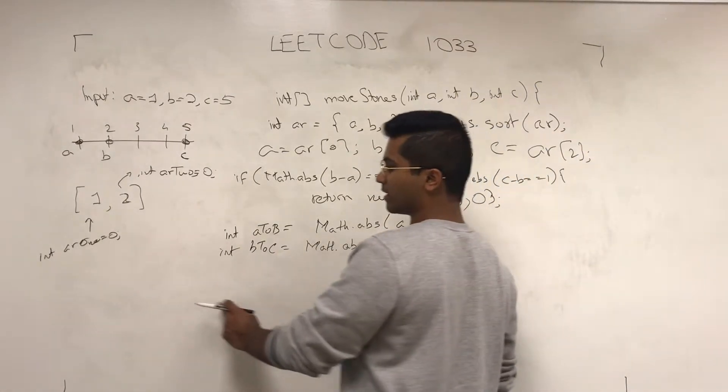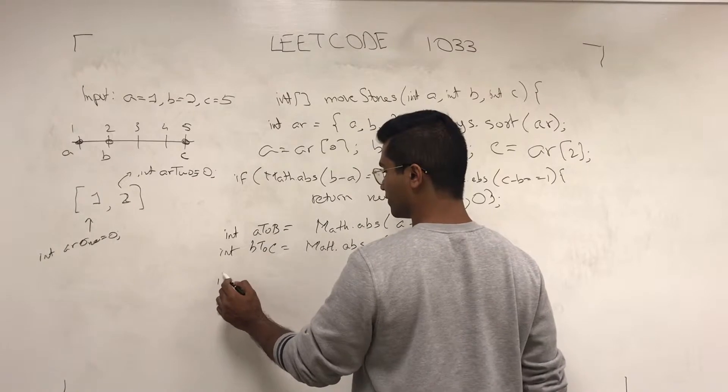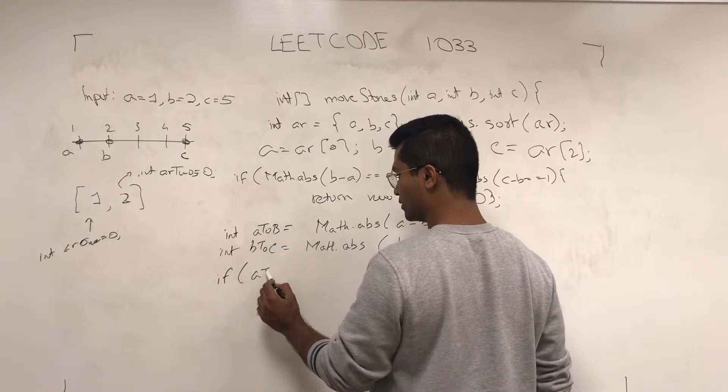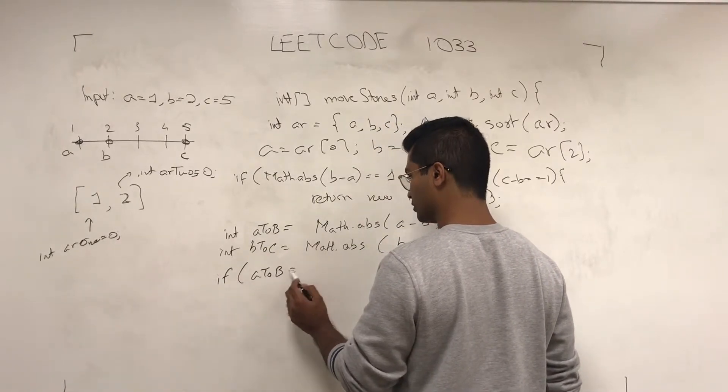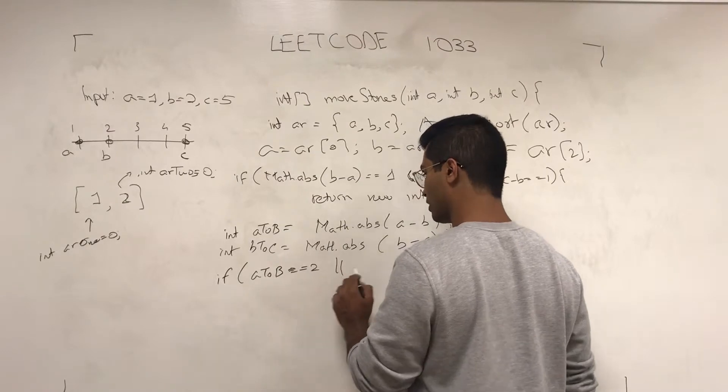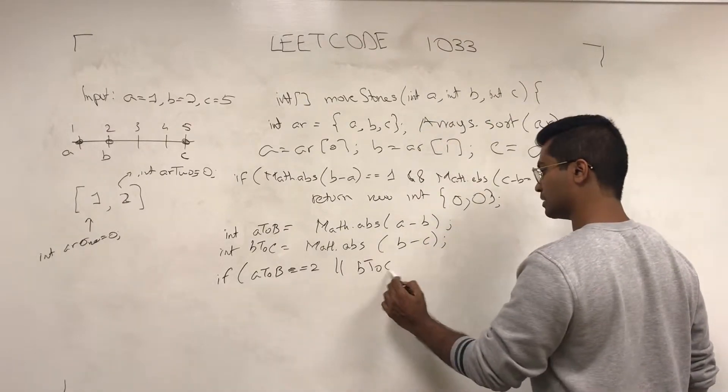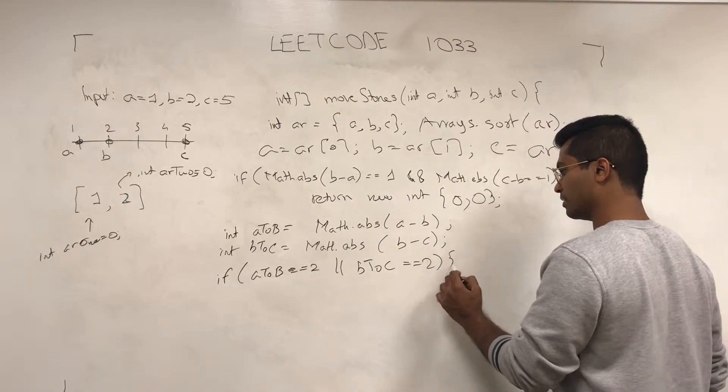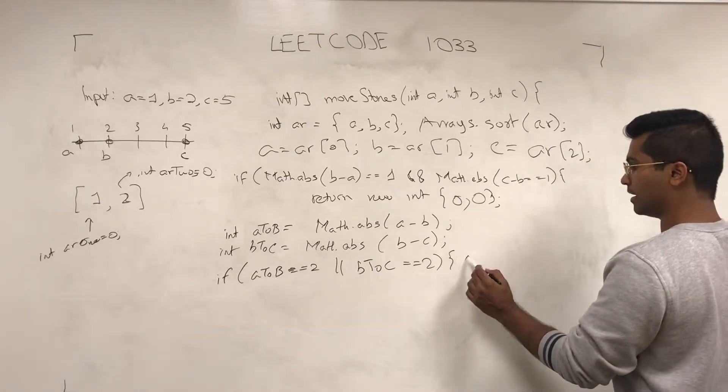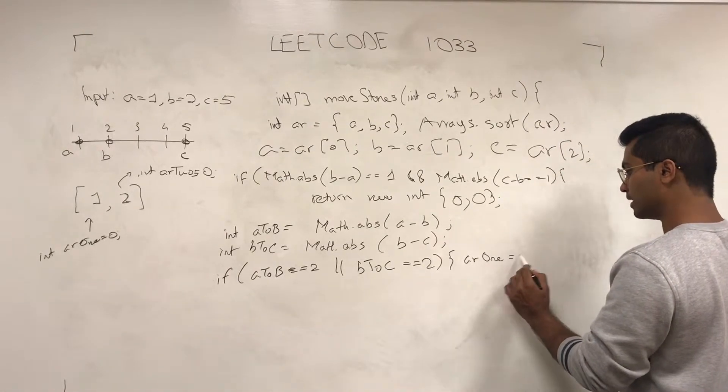So first I'm going to take care of AR1. If AtoB is equal to 2 or BtoC is equal to 2, then AR1 is going to be 1.